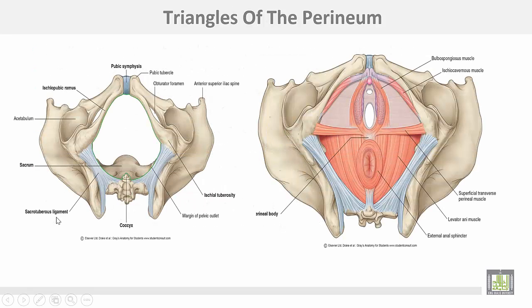This is the outlet of the pelvic cavity, and this is the perineum divided by an imaginary line between the two ischial tuberosities into the urogenital triangle anteriorly and the anal triangle posteriorly.